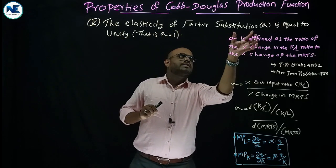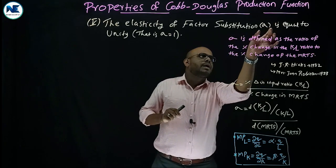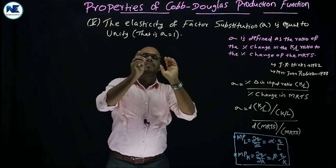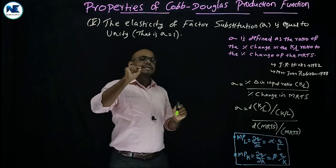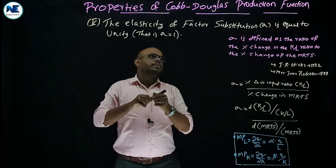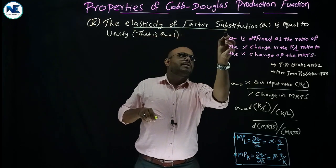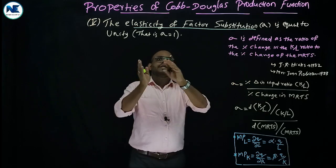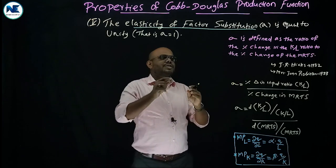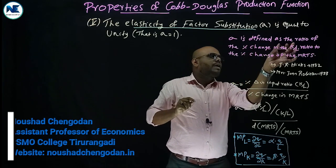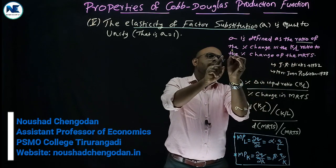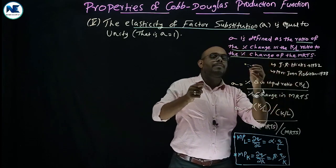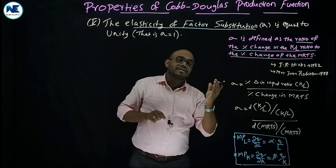The elasticity of factor substitution — sigma (σ) — is equal to unity, which is a very important property of the Cobb-Douglas production function. We can expect a separate five-mark question on this topic. Elasticity of factor substitution is defined as the ratio of the percentage change in the K/L ratio to the percentage change in the MRTS — marginal rate of technical substitution.